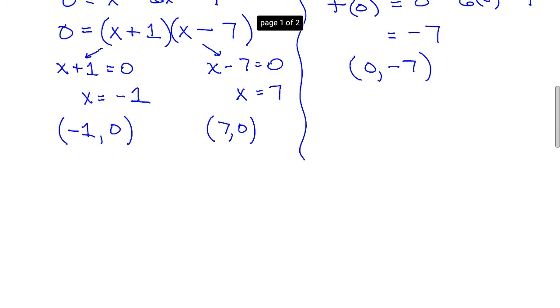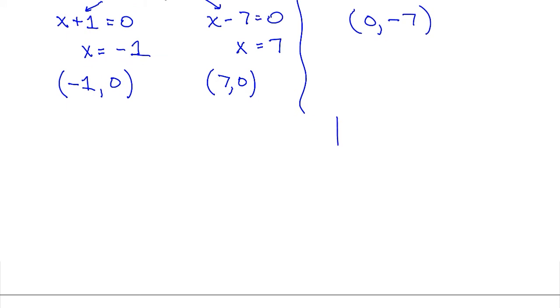Now let's make a little graph based on these points. So we know that we have a y-intercept of -7. We have an x-intercept of -1, and another x-intercept of positive 7. And we know this forms a parabola. So it's going to look something like this. And we'll do more graphing later in the semester.